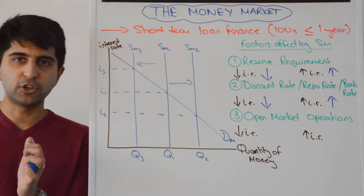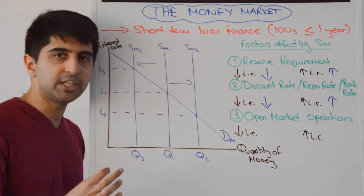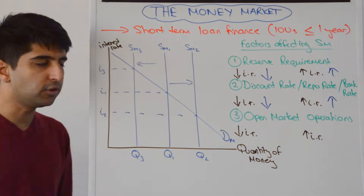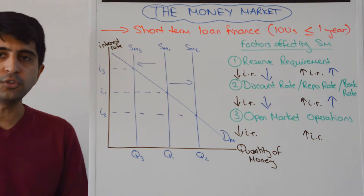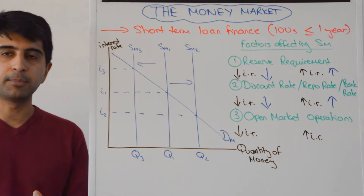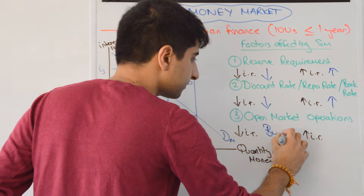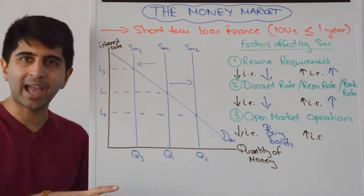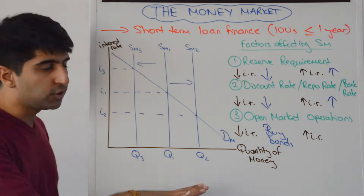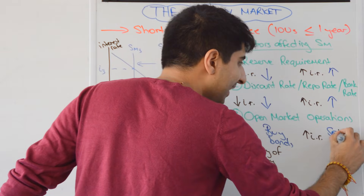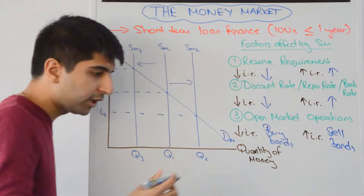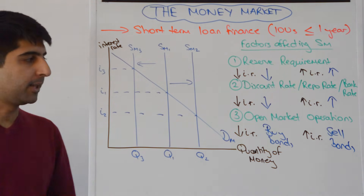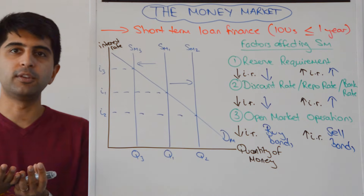The central bank can also engage in open market operations — this is the dominant way of changing interest rates in the US. The Federal Reserve buys and sells bonds to change the money supply and the interest rate. If the central bank wants to reduce interest rates, it needs to increase the money supply, and it does that by buying bonds — replacing paper with cash, increasing the money supply and reducing the interest rate. Whereas if the central bank is selling bonds, commercial banks sitting on cash replace that cash with paper, taking money out of the economy, reducing the supply of money and increasing interest rates.